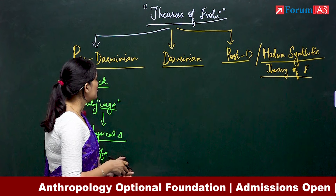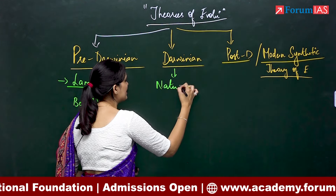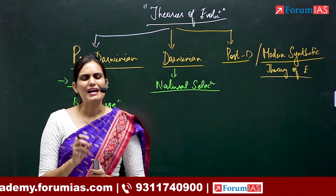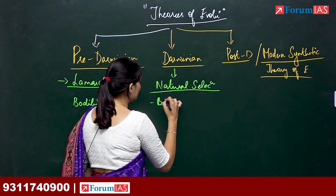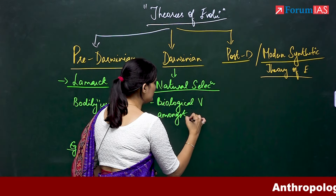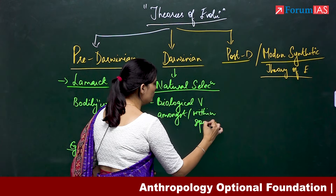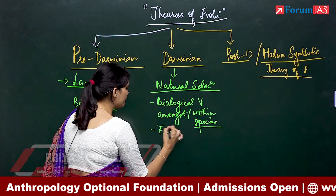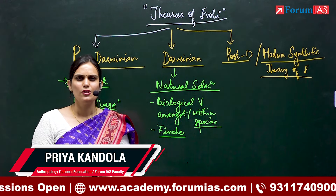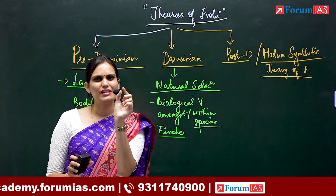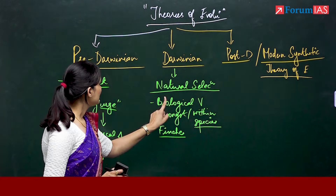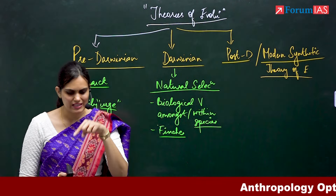Then came Darwin with his very famous idea of natural selection. When talking about evolution, he highlighted that there is biological variation within species themselves. If you consider the classic Darwinian finches example, he studied different finches having different beaks — though they all belong to the category finch, their beaks were very differently adapted to the different environments where they were living. So he found that every organism has biological variation within itself.